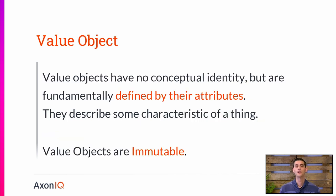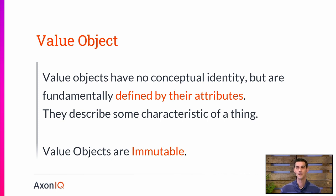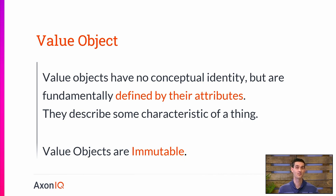Opposite of the entity, we have the value object. A value object has no conceptual identity, but is rather fundamentally defined by its attributes. It typically describes the characteristics of a thing and they are immutable. That means that the attributes are, in fact, the identity of the value object — changing any of those attributes makes us believe that it is a different value object. If you change something to an object and therefore recognize it as a different object, it is a value object. If you recognize it as the same one but with different attributes, it will be an entity. Value objects are immutable because identity cannot change — you cannot change the identity of a concept, so if the object is identified by its attributes, the attributes cannot change.